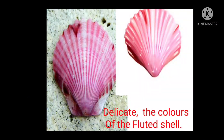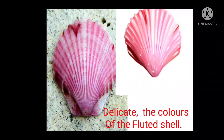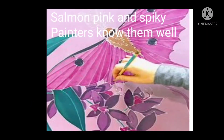Delicate the colors of a fluted shell, salmon pink and spiky — painters know them well. The fluted shell has a delicate color. It has pink color which is salmon pink and also spiky. These two were well known by the painters.